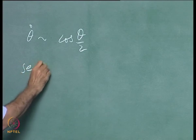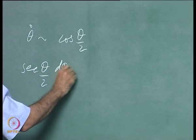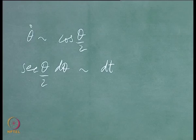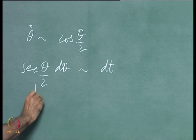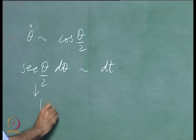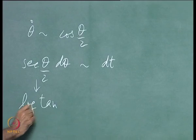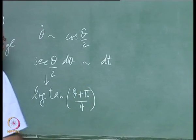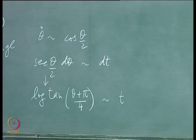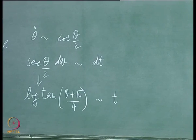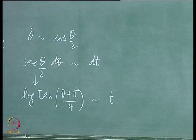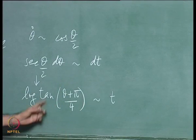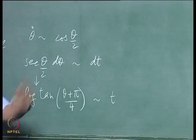This gives sec(θ/2) dθ proportional to dt. The integral leads to something like log tan(θ/2 + π/4), which is proportional to t, apart from some constants. Therefore θ can be written down explicitly in terms of the inverse tangent of an exponential of some time.